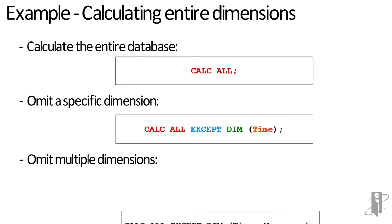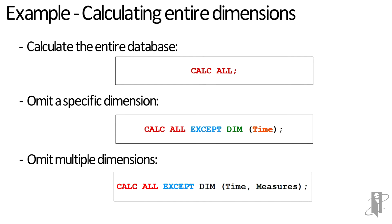If I want to ignore multiple dimensions, I could say CALC ALL EXCEPT DIM time comma measures and it will do all the aggregation, all the member formulas on all the dimensions except time and measures.